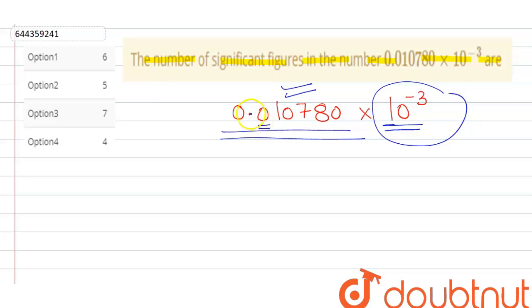Why? Because it is towards the left of non-zero, so it is not a significant figure. Whereas one is a significant figure, zero is a significant figure, seven, eight, and zero. So that means the total number of significant figures...